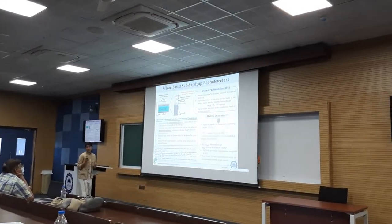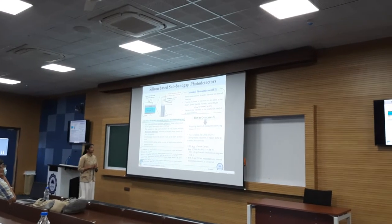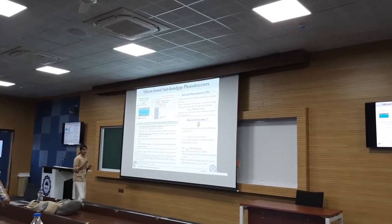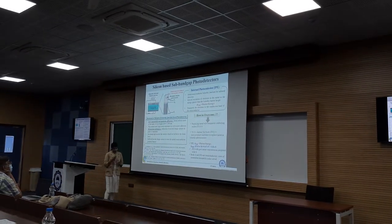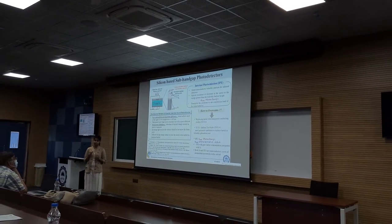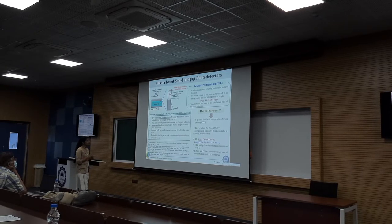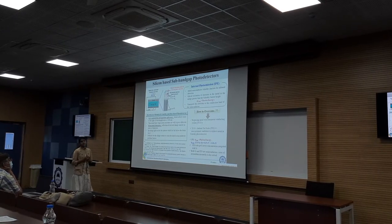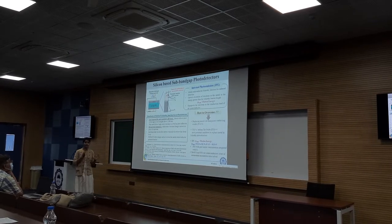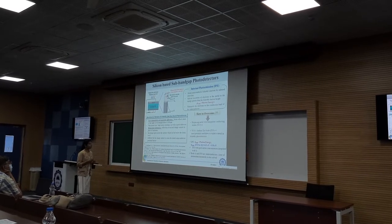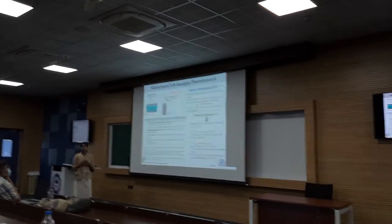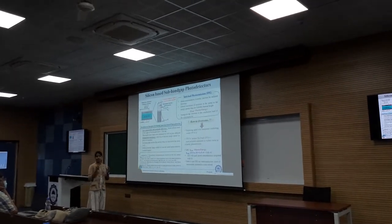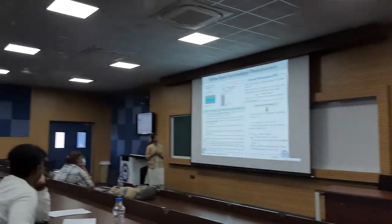Next, I will discuss silicon-based sub-bandgap photodetectors. Photodetectors are a crucial component on the receiver side of optical communication, but they suffer from poor responsivity at 1550 nanometers. Silicon-based photodetectors in the visible range up to 1100 nanometers with good responsivity have already been designed. But for wavelengths above 1100 nanometers, the photon energy is much smaller than the bandgap of silicon, and hence band-to-band transition is not possible. Internal photoemission (IPE) in Schottky junctions has been used for achieving photodetection in the infrared region.